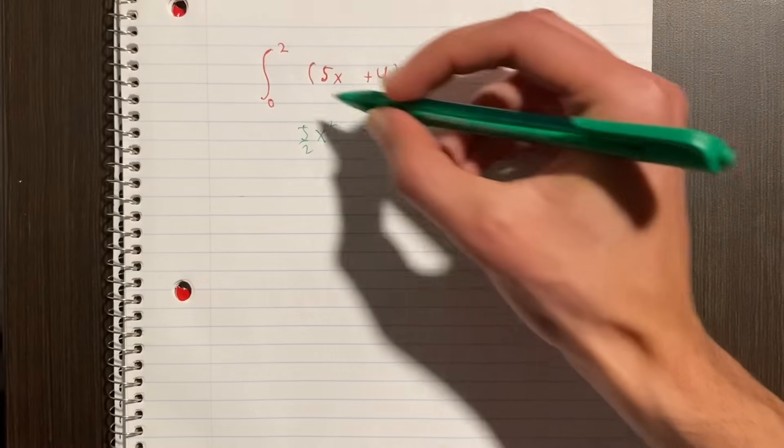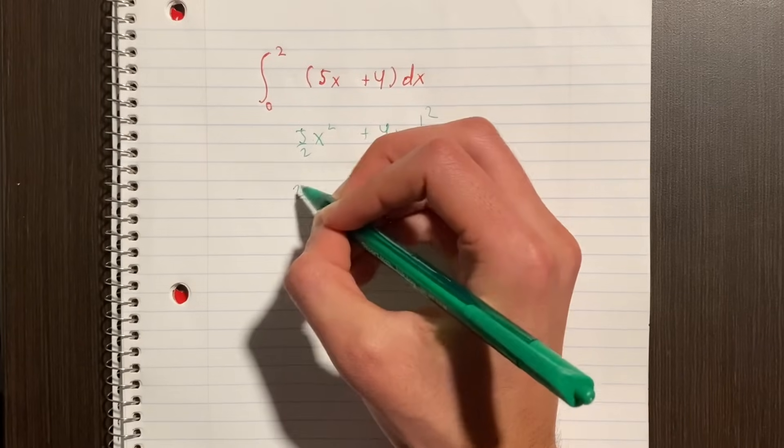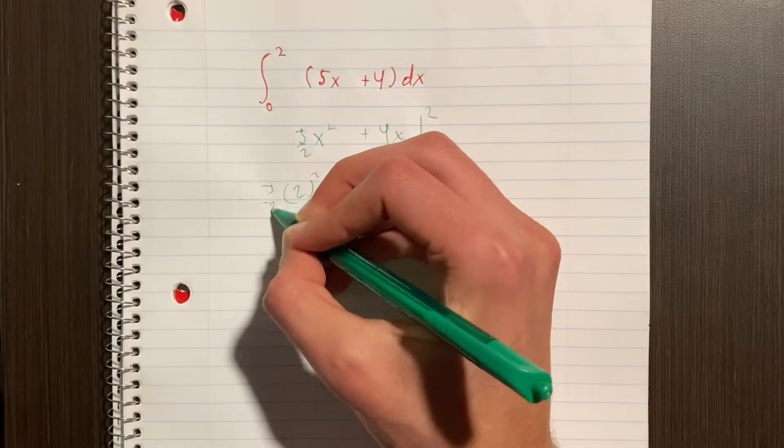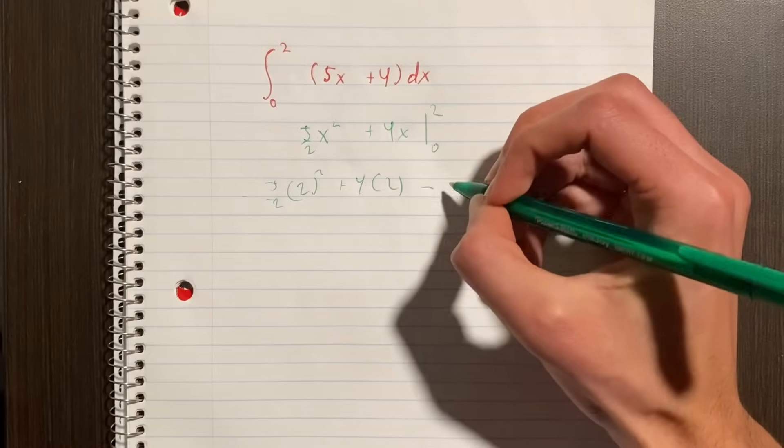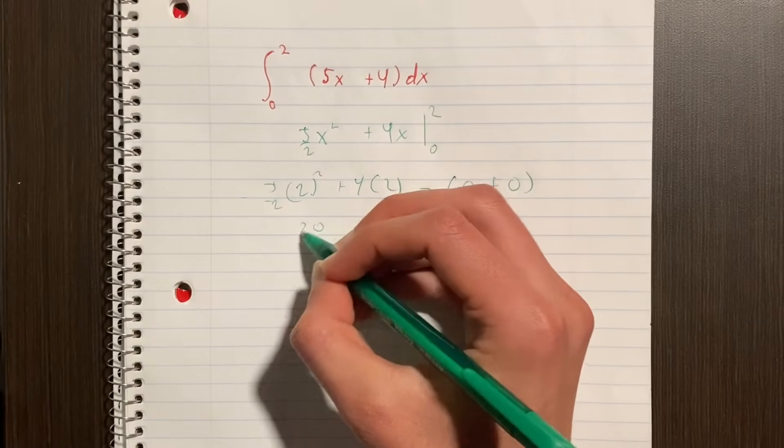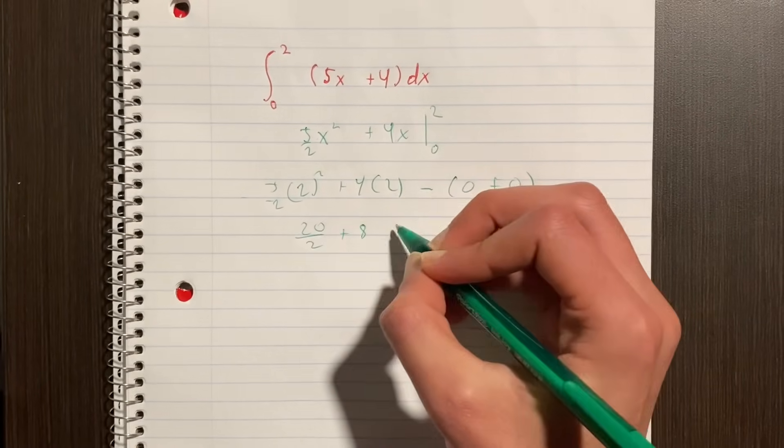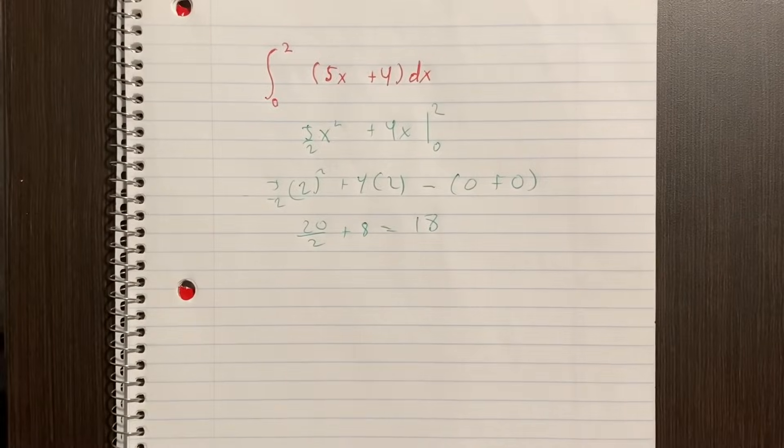And instead of squiggly now you got a solid line 0 to 2. Plug in 2 squared, 5 over 2, plus 4 times 2, minus plug in 0, 0 plus 0, and you're left with 20 over 2 plus 8 equals 18. And that is basically one year's worth of calculus.